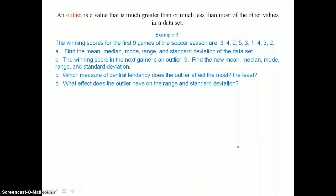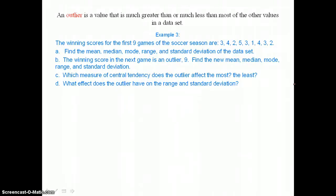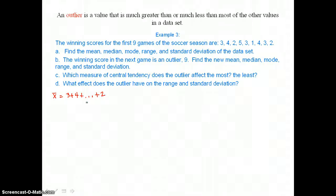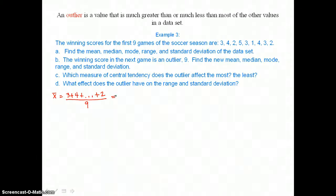An outlier is a value that is much greater than or much less than most of the other values in a data set. In example 3, the winning scores for the first 9 games of a soccer season are given. In part A, we want to find the mean, median, mode, range, and standard deviation. Starting with the mean, or x-bar, we add up all the scores and divide by 9, giving us a mean of 3.